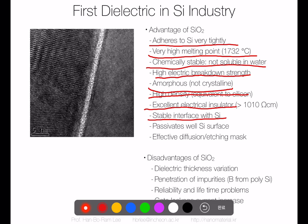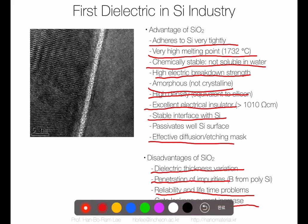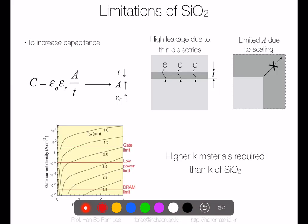Silicon oxide also passivates the silicon surface and acts as an effective diffusion and etching mask. However, its disadvantages include dielectric thickness variation, impurity penetration, reliability and lifetime problems, and increased gate leakage current. When the silicon oxide layer is too thin, electrons directly tunnel through to the metal gate — this is tunneling current.